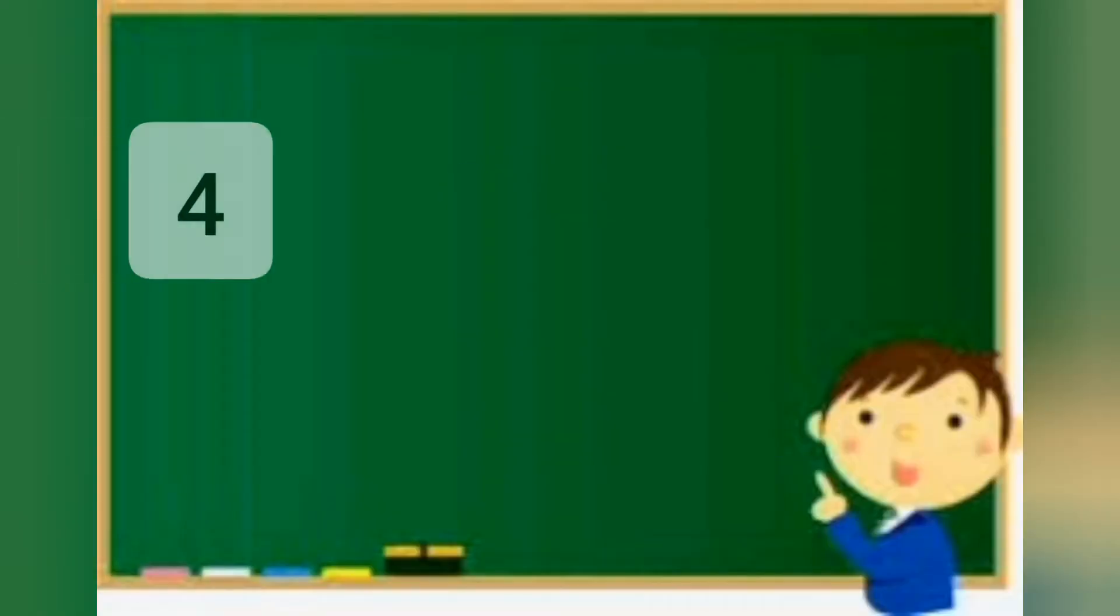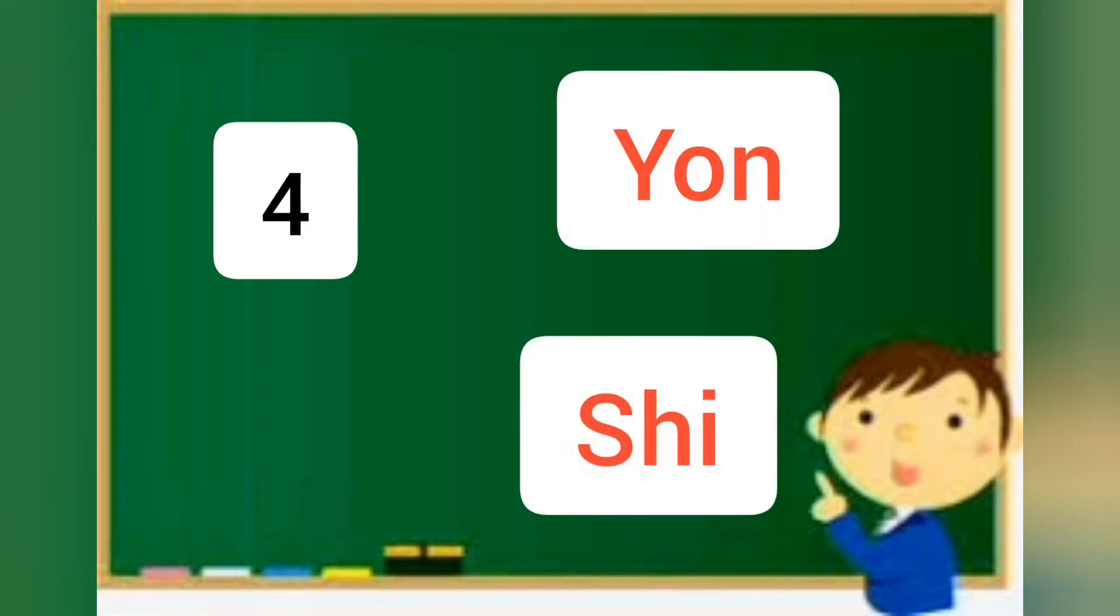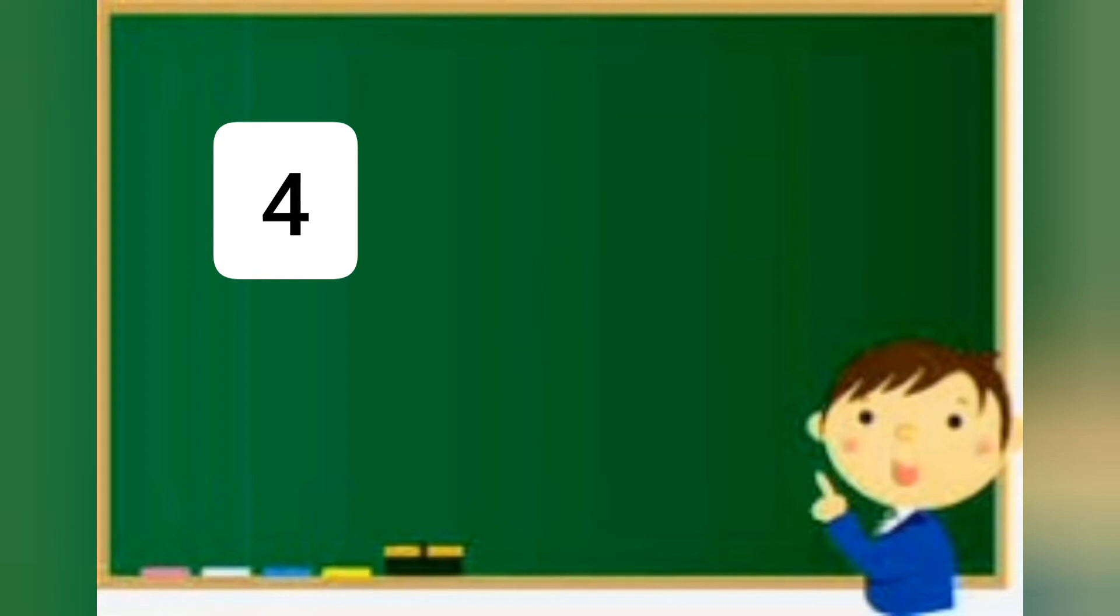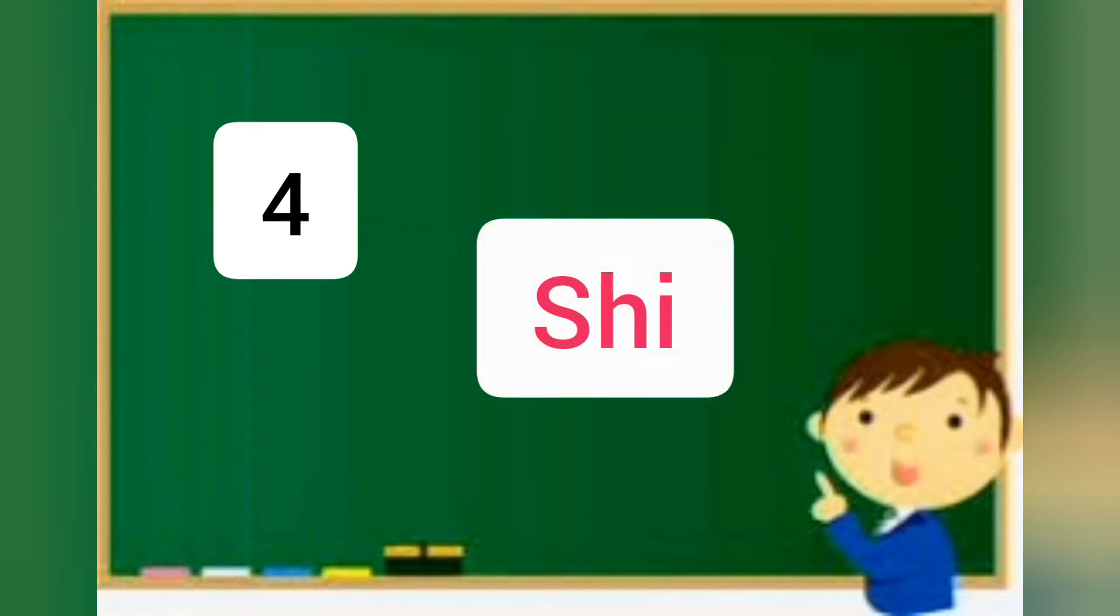For number four, there are two words in Japanese to use: yon or shi. But we usually use shi to count number four in Japanese, so don't get confused. Use shi when you're counting number four in Japanese.